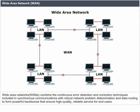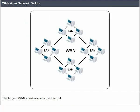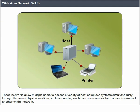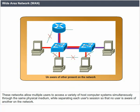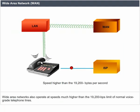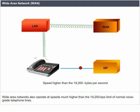WANs combine continuous error reduction and correction techniques with robust network problem determination and data routing to form powerful backbones that ensure high-quality, reliable service for end users. The largest WAN in existence is the Internet. These networks allow multiple users to access a variety of host computer systems simultaneously through the same physical medium, while separating each user's session so that no user is aware of another on the network.